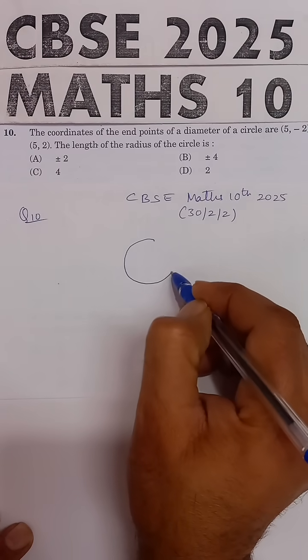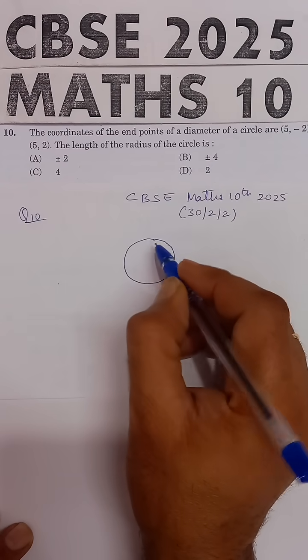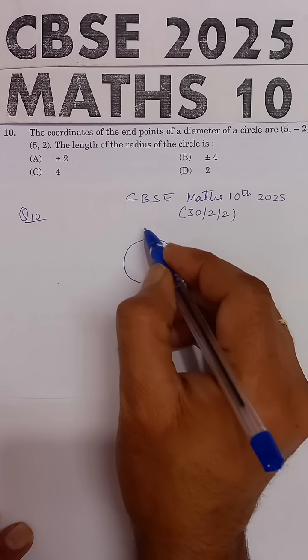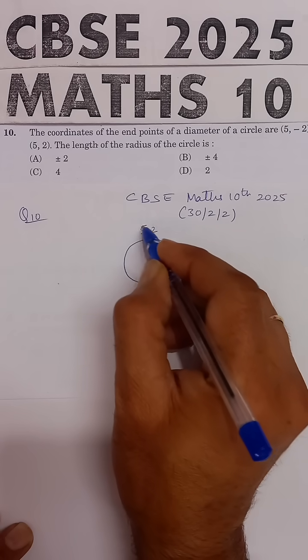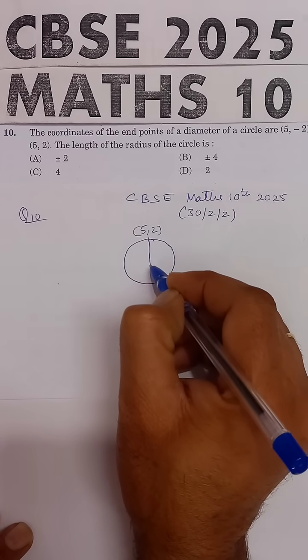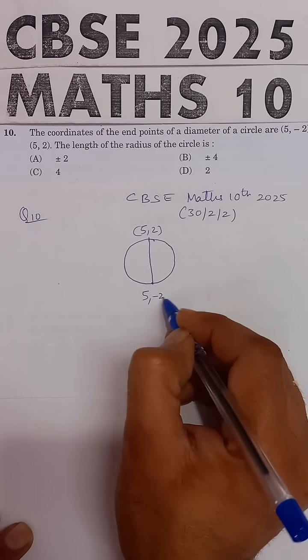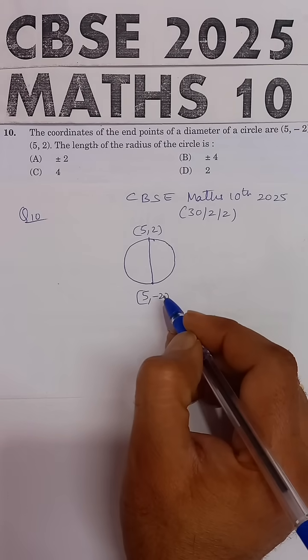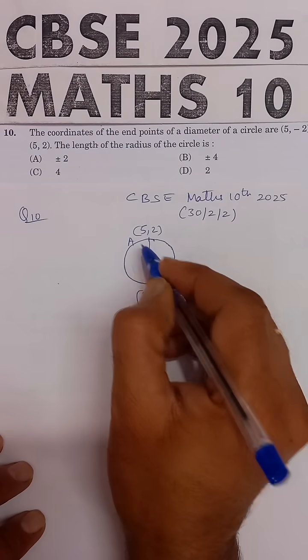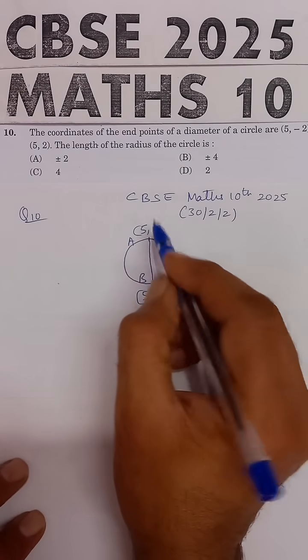The coordinates of the endpoints of the diameter of a circle are 5, 2 - this is one endpoint. And the second endpoint is 5, minus 2. Suppose we are naming these as A and B.